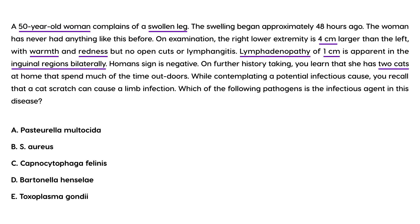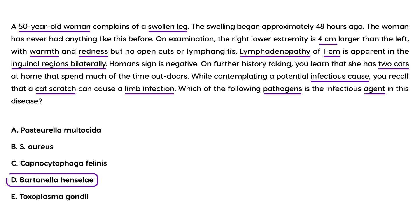On further history taking, you learn that she has two cats at home that spend much of their time outdoors. While contemplating a potential infectious cause, you recall that a cat scratch can cause a limb infection. Which of the following pathogens is the infectious agent? The answer is Bartonella henselae.